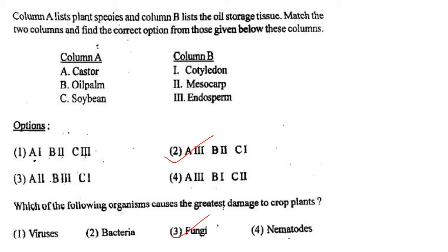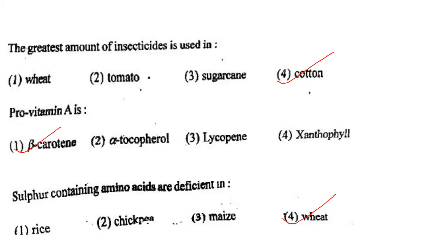Next one: Which of the following organism causes the greatest damage to crop plants? Option 1, viruses; option 2, bacteria; option 3, fungi; option 4, nematodes. Answer is option 2: bacteria.